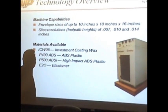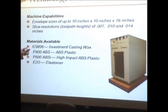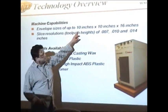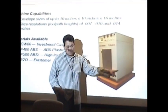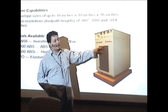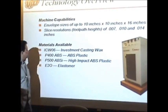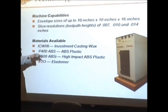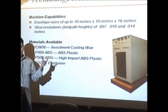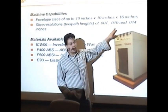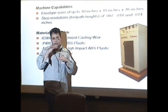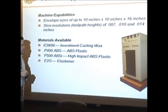So some of the machine capabilities is that it can build a part with a building envelope of 10 inches by 10 inches by 16 inches. It has a slice layer resolution, depending on the tool path height, depending on the nozzle tip that you use. It can build 7000ths, 10000ths, or 14000th build layer thicknesses.